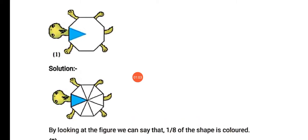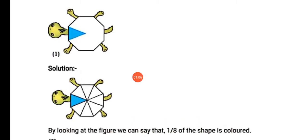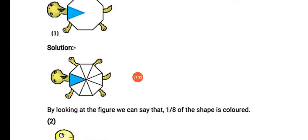The first shape is like a turtle, and here a blue colored triangle is colored. First we will count the sides — there are 8 sides. Total 8 triangles banhenge, from which one is colored. So by looking at the figure, we can say that 1 eighth of the shape is colored.